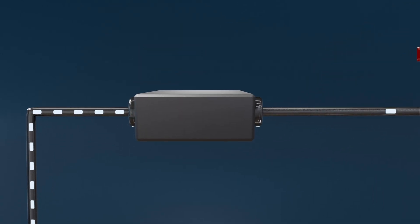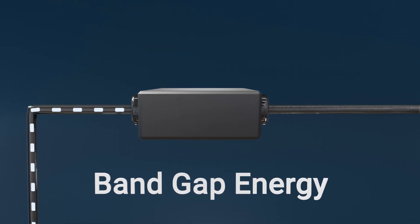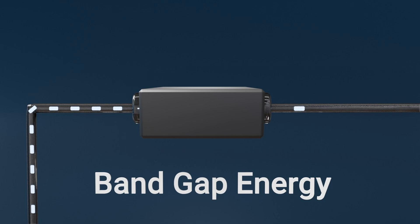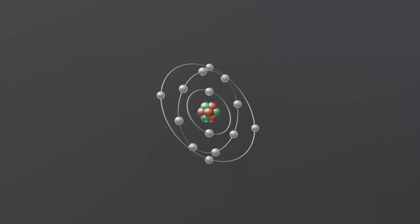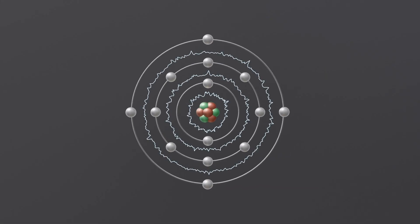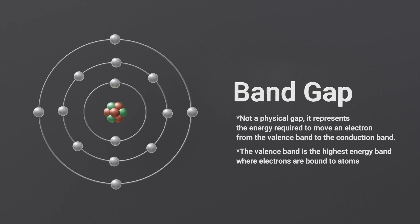The key to semiconductor function is the band gap energy. Unlike conductors, where electrons move freely, semiconductors have an energy gap, known as the band gap, between the valence band, where electrons are bound to atoms, and the conduction band, where electrons are free to move.